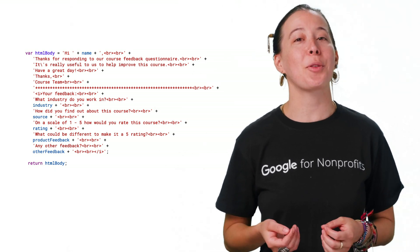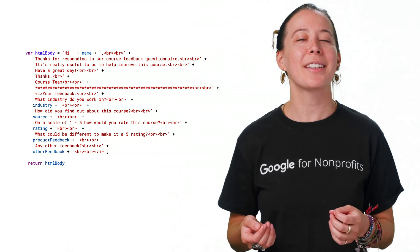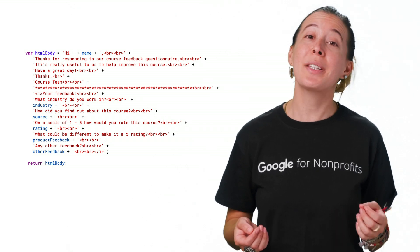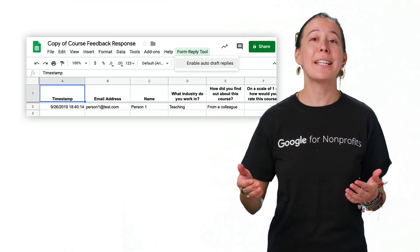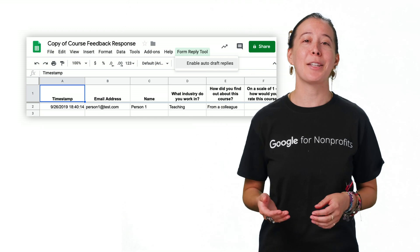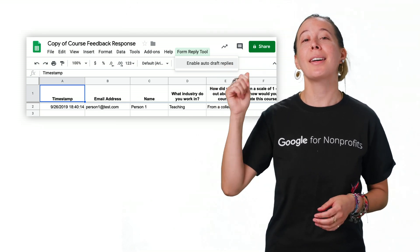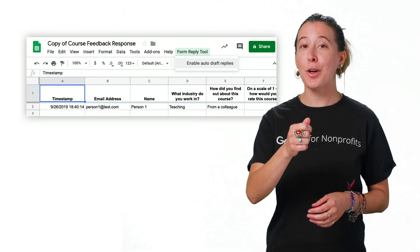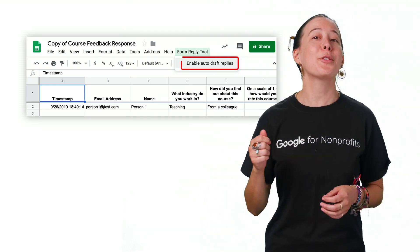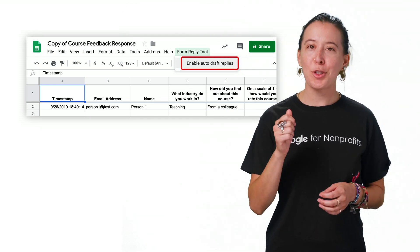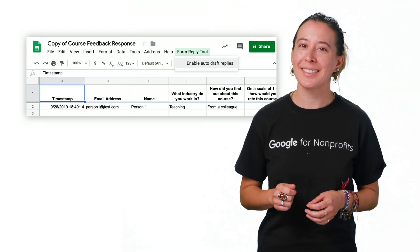Upon opening the draft, you can add additional comments if desired, and then choose to send the email. Note that this whole workflow needs to be activated by selecting the Form Reply Tool custom menu and then its dropdown option, Enable Autodraft Replies, which is instructed to display every time the sheet is opened.